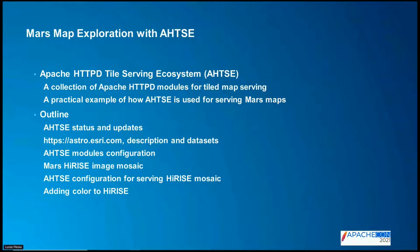The talk is a practical example of how to use these modules to build an Apache HTTPD server for tile serving — in this case for Mars maps — which is a live server supported by Esri called astroesri.com. I'm going to update on what Otzi is and its current status, then talk about the server itself, the datasets, and what it's for. Then we'll dive deeper into the Atze module configuration and how they're used to configure the Mars HiRISE image mosaic, which is a massive dataset. The last piece is changing the configuration to add color, because it's grayscale by default.